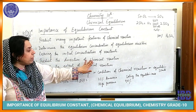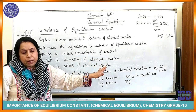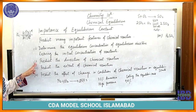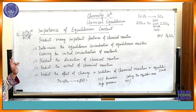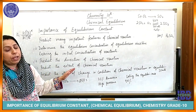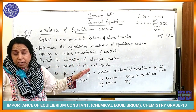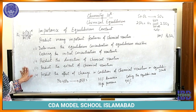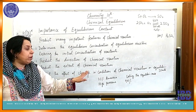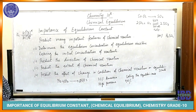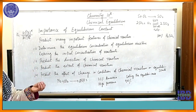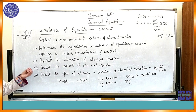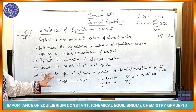Next, we can predict the direction of the chemical reaction — whether it is taking place in the forward direction. We can also predict the extent of the chemical reaction, and we can predict the effect of a change in conditions of a chemical reaction at equilibrium state. Whether it is temperature or pressure, we can predict the effect of that change.